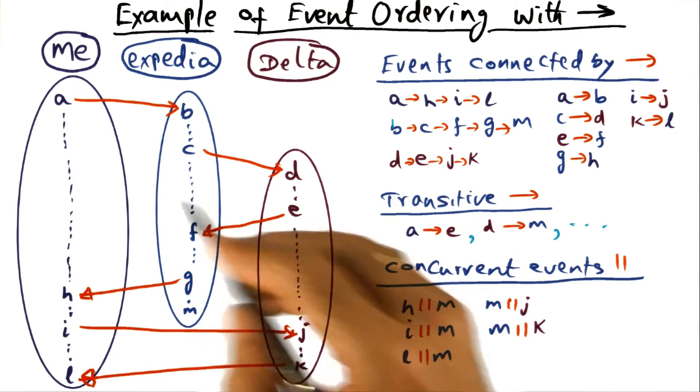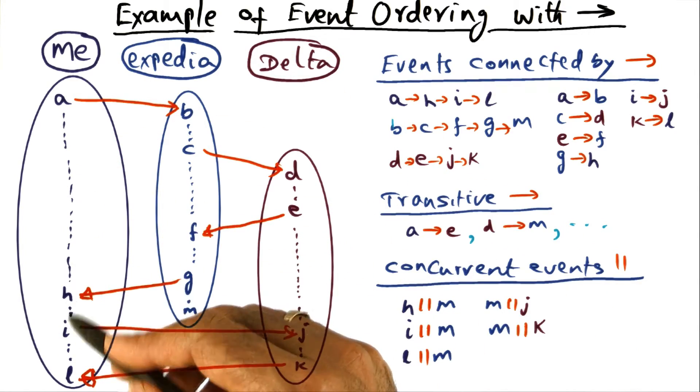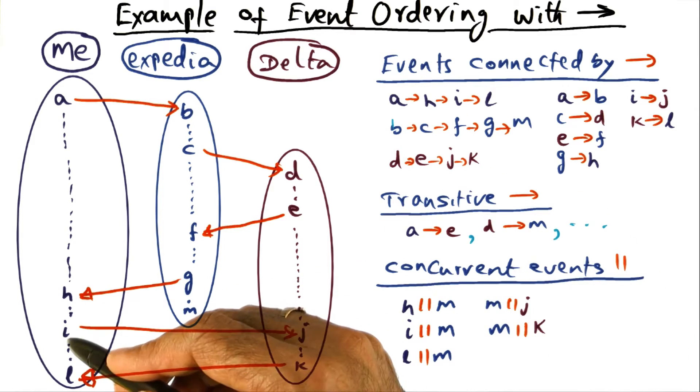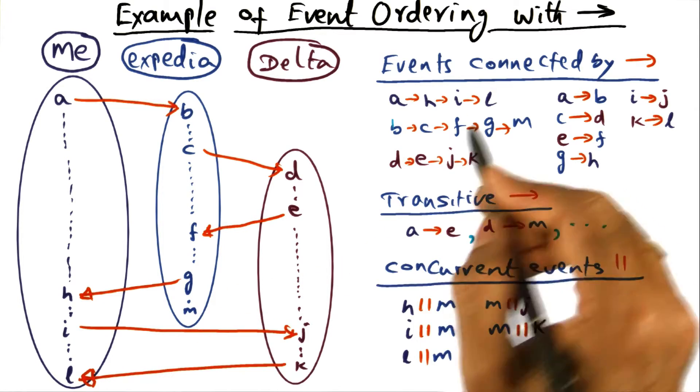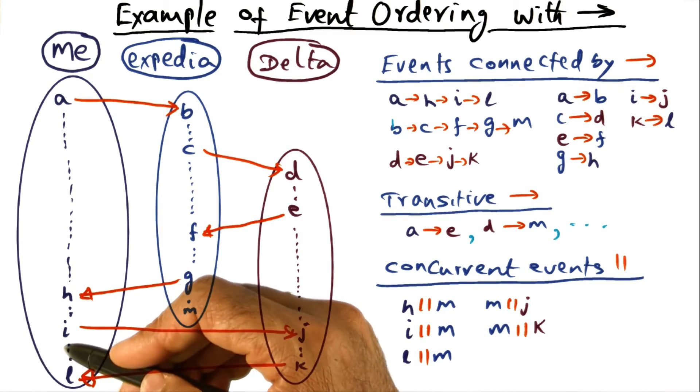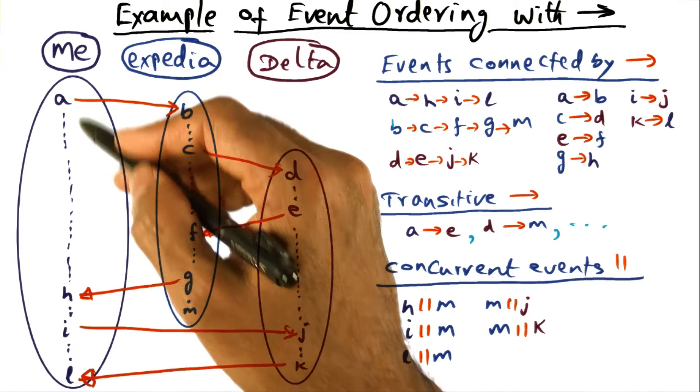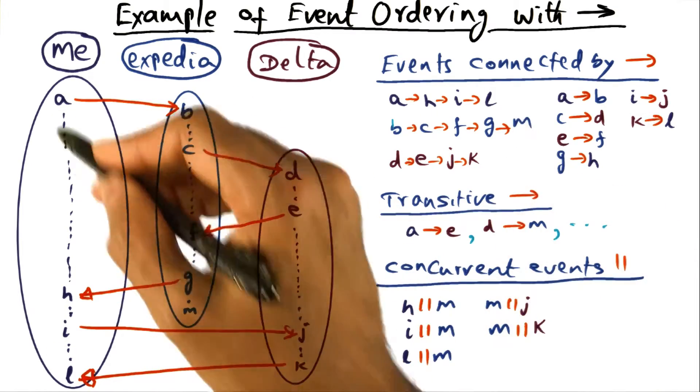then we know that A happened before H, and H happened before I, and I happened before L. So that's the textual ordering and we know that process is sequential. This is the ordering of events in my process.